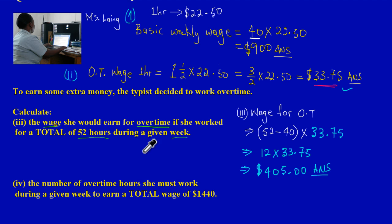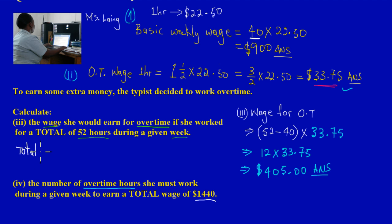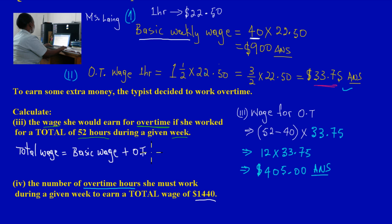They're asking us to calculate the overtime hours. Now let's jot down some critical information. Since they've given us the total amount she earned that week, we know that total wage equals basic wage plus overtime pay. Every week her employer must pay her $900 in basic pay, and her overtime is determined by the hours she worked.